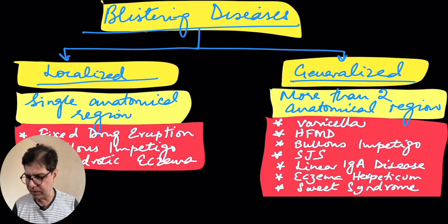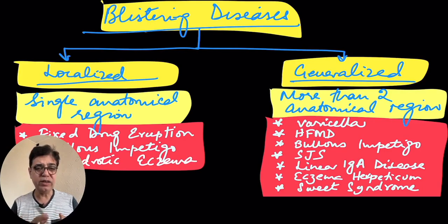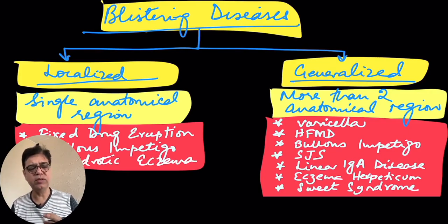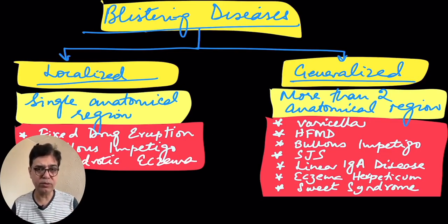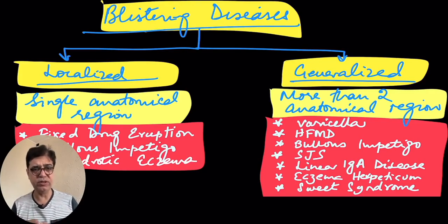The mucosal surface is also usually involved in erythema multiforme major or Stevens-Johnson syndrome — typically the oral cavity, and sometimes the eyes as well. Other conditions include linear IgA disease, also known as chronic bullous disease of childhood, which I will explain later; eczema herpeticum, which is herpes simplex infection of skin weakened by eczema or atopic dermatitis; and Sweet syndrome, or acute febrile neutrophilic dermatosis — an immune-mediated disease that can occur sporadically or as part of a paraneoplastic process in children with underlying malignancy.